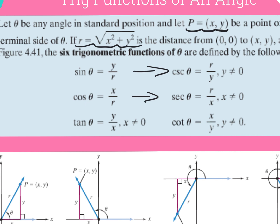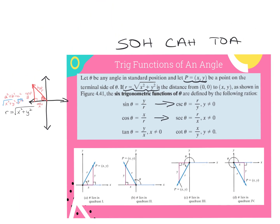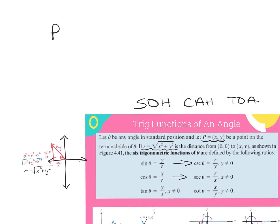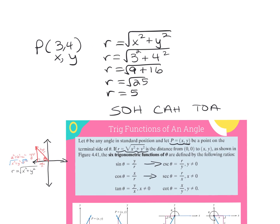Let's find the value of the six trig functions given the ordered pair (3, 4). So x is 3 and y is 4. I need to find r: r equals the square root of x squared plus y squared. Following order of operations, 3 squared is 9, 4 squared is 16, 9 plus 16 is 25, and the square root of 25 is 5. So my r value is 5.